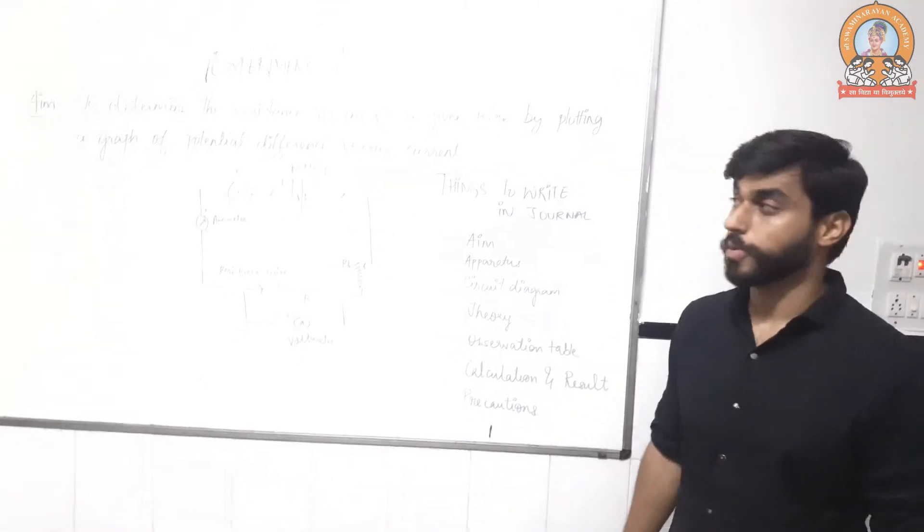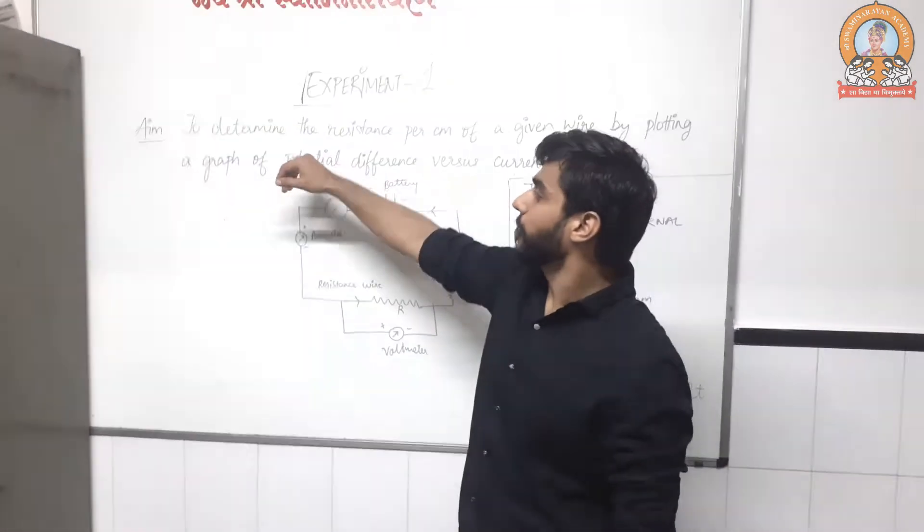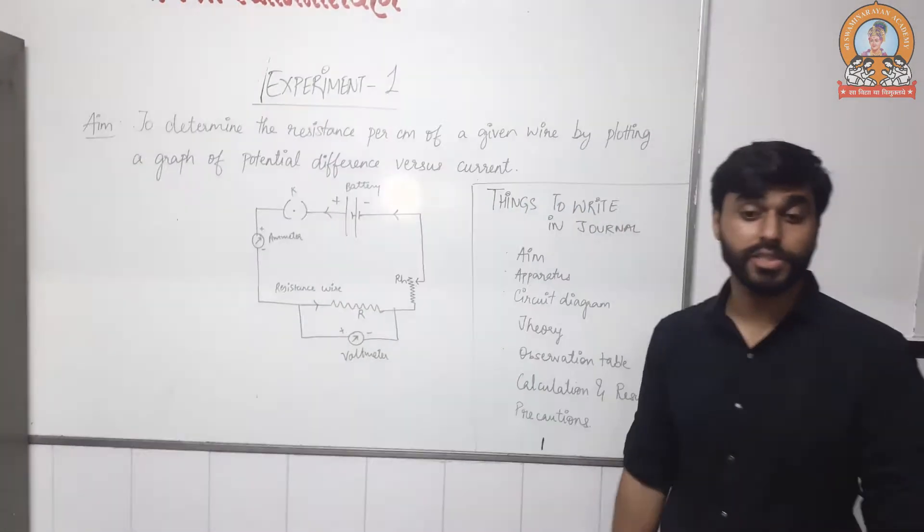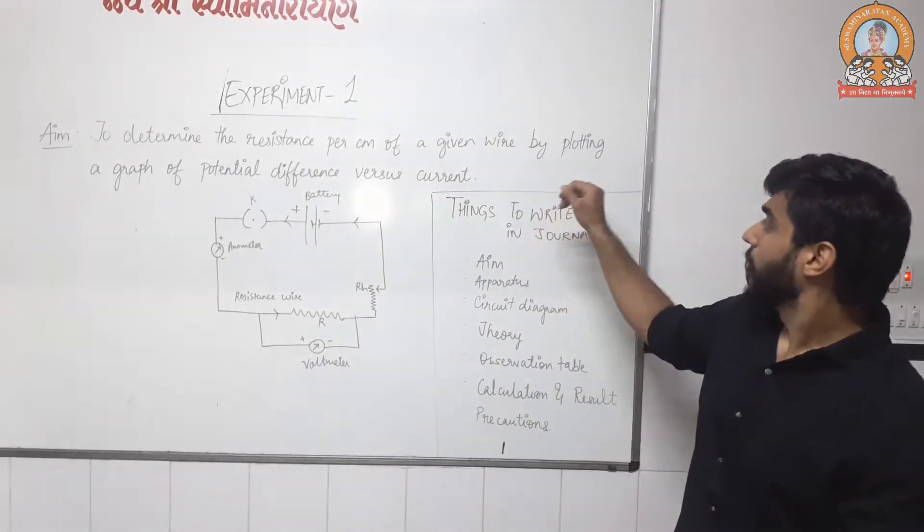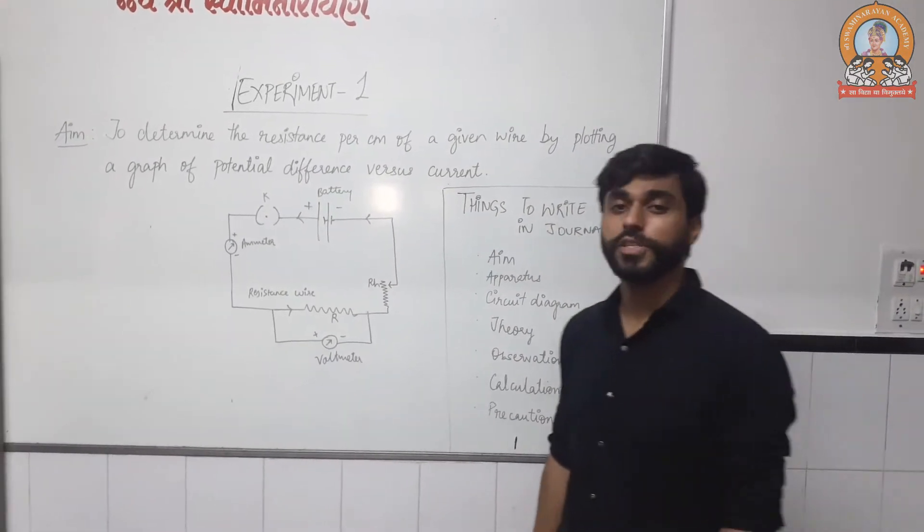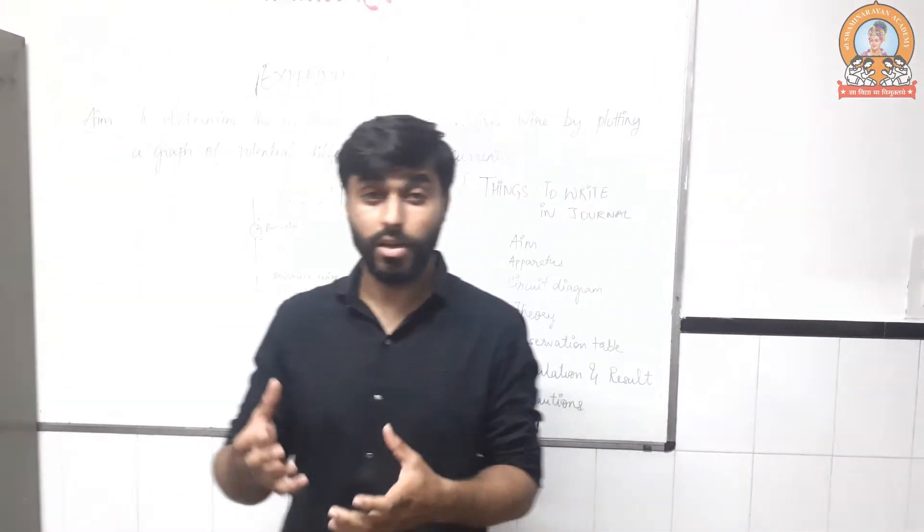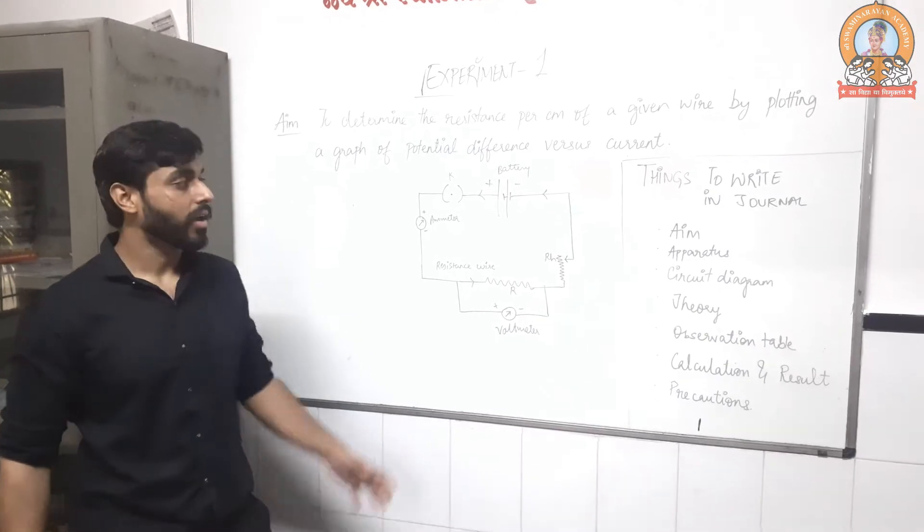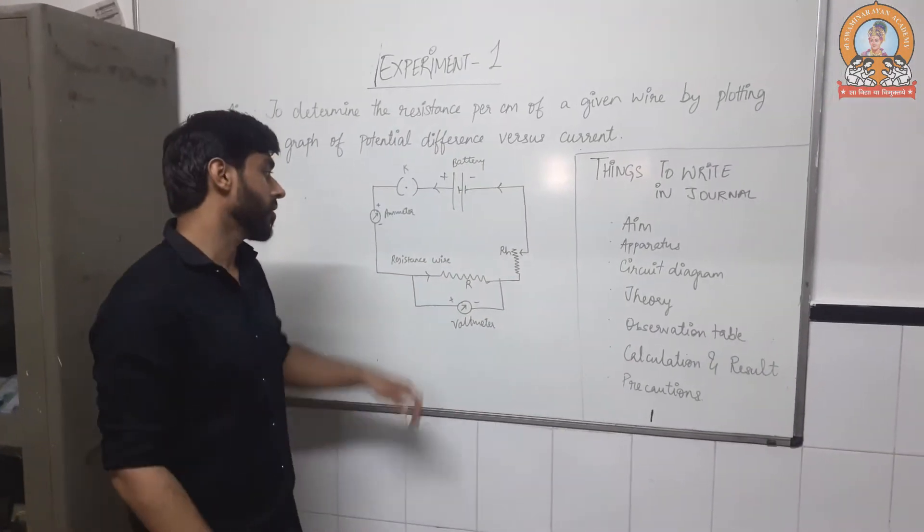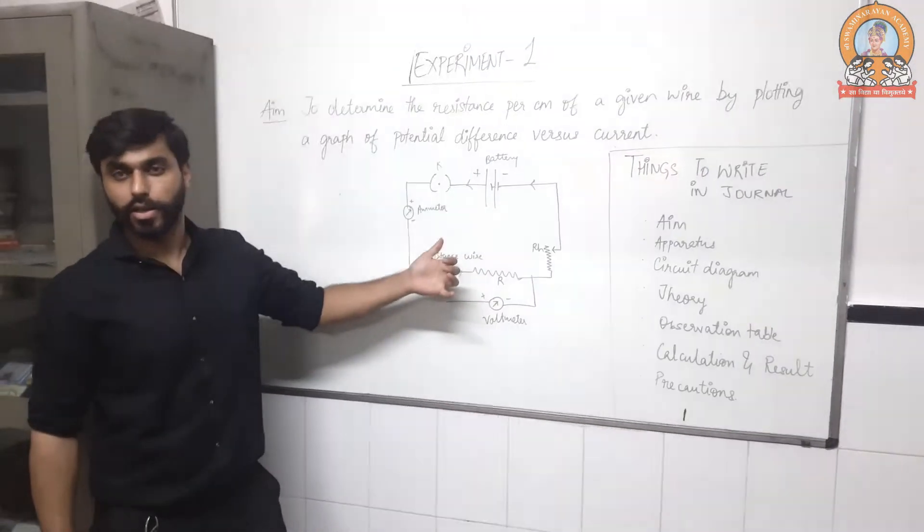Today we will be performing our first experiment. Our aim is to determine the resistance per centimeter of a given wire. The wire will be provided to you. By plotting a graph of potential difference versus current, we will be using voltmeter, ammeter, batteries, rheostat and we will perform this experiment. Now we have this circuit diagram.